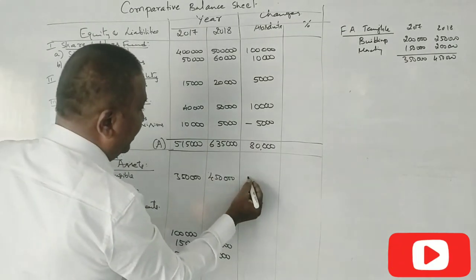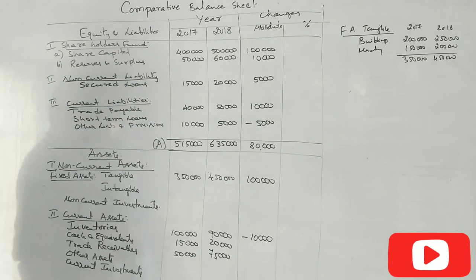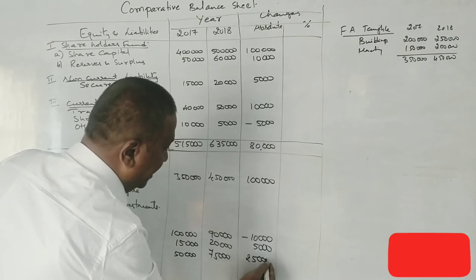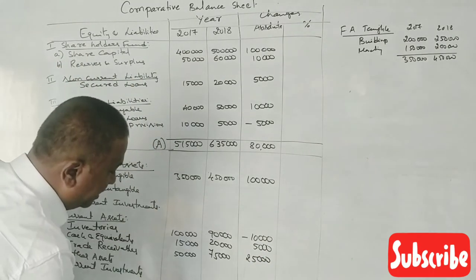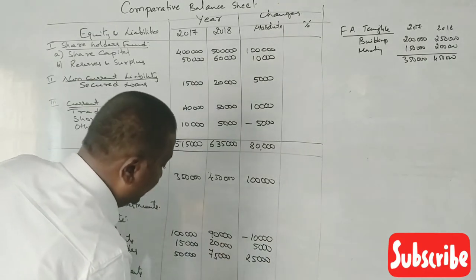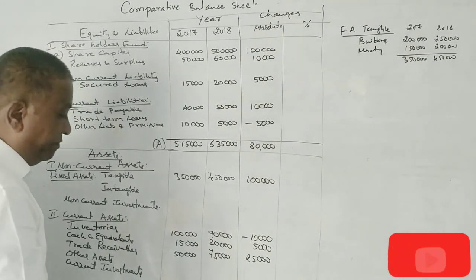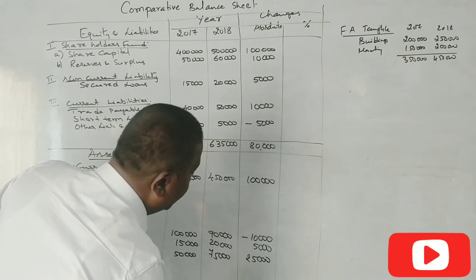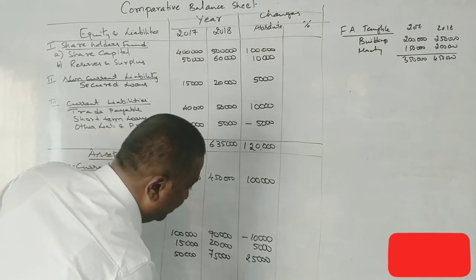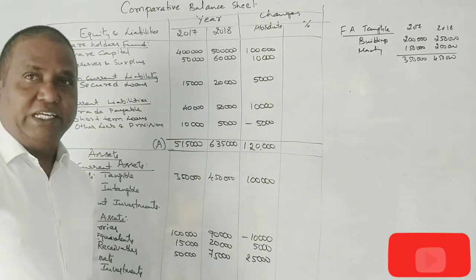3,50,000 increases to 4,50,000 — that is an increase. 1,90,000 shows a decrease, and 10,000 rupees. 15,000 to 20,000 rupees is an increase of 5,000, and 25,000 rupees increase. Total check mark: verify all totals.